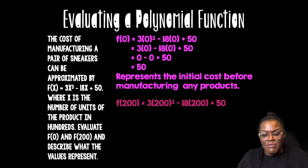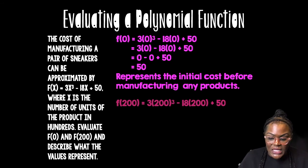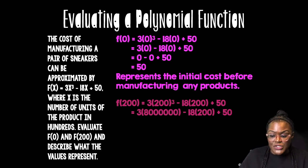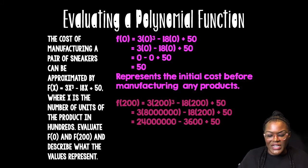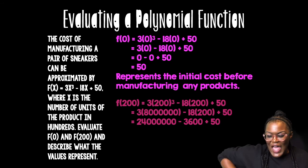Now, what if I made 200 sneakers? So I'm going to plug in 200. So I'm making 200 sneakers. So I'm plugging in 200 in for x. So I'm going to do 200 cubed, which is a very big number. And then I'm going to do my multiplication. So 3 times that very big number, and then 18 times 200. So then once I do my multiplication, because remember PEMDAS, so exponents first, multiplication, and now we're going to do addition and subtraction from left to right.